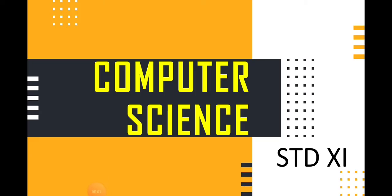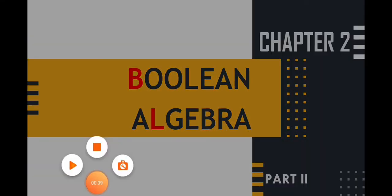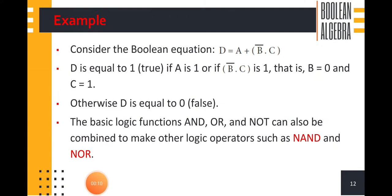In this video we are going to discuss about 11th standard computer science chapter 2, Boolean algebra part 2 video 2. In this video class we are going to discuss about some examples of logical operators AND, OR, NOT, and we discuss the remaining logical operators NAND, NOR, and then logical gates also.